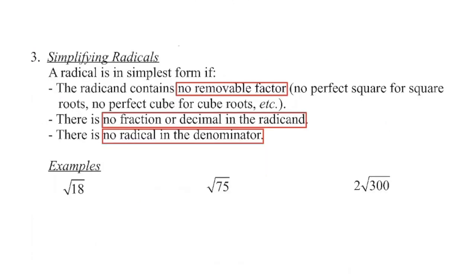In order for a radical to be simplified, we cannot have any fraction or decimal in the radicand. We also cannot have a radical in the denominator — we'll get to that more when we look at dividing radicals. We cannot have any removable factor within the radicand either. So if we have a square root, there can be no perfect square that can be removed from that radicand. If we have a cubed root, we cannot have a perfect cube that can be removed from that radicand.